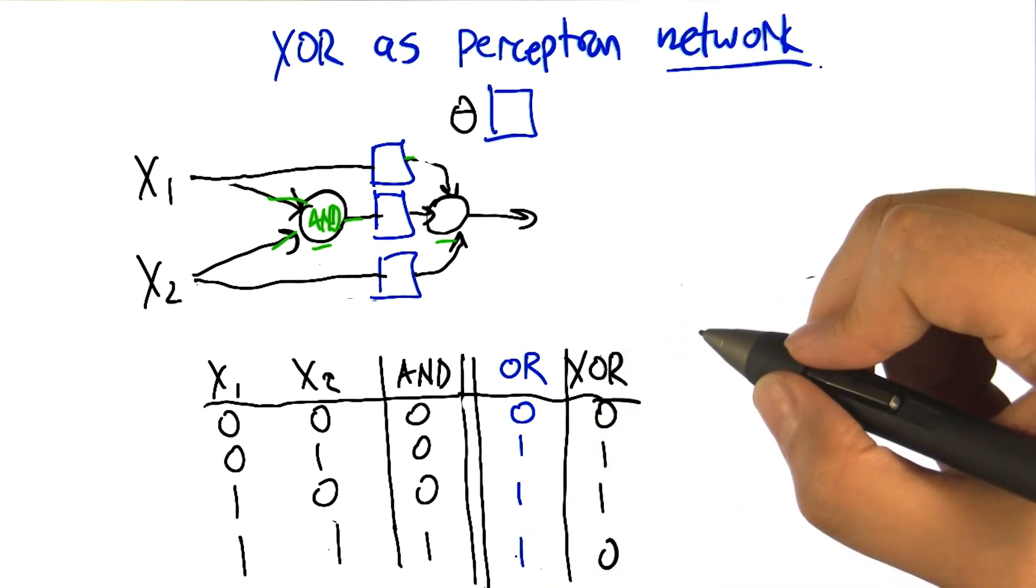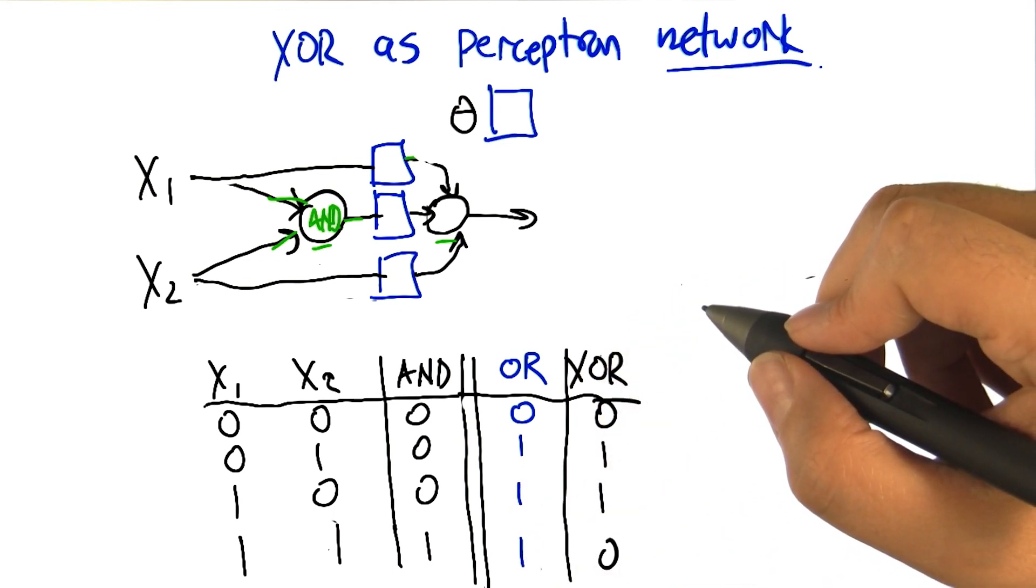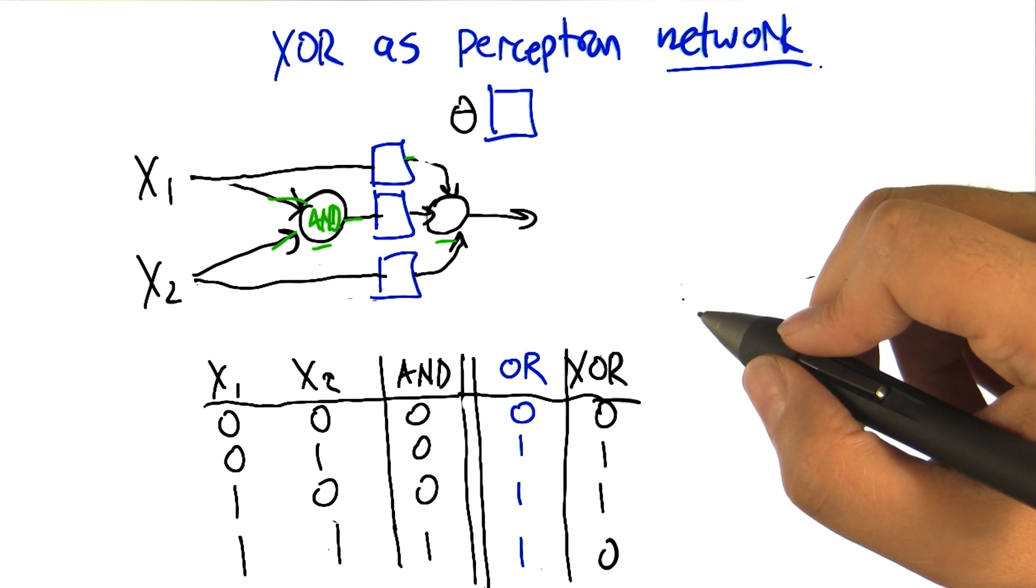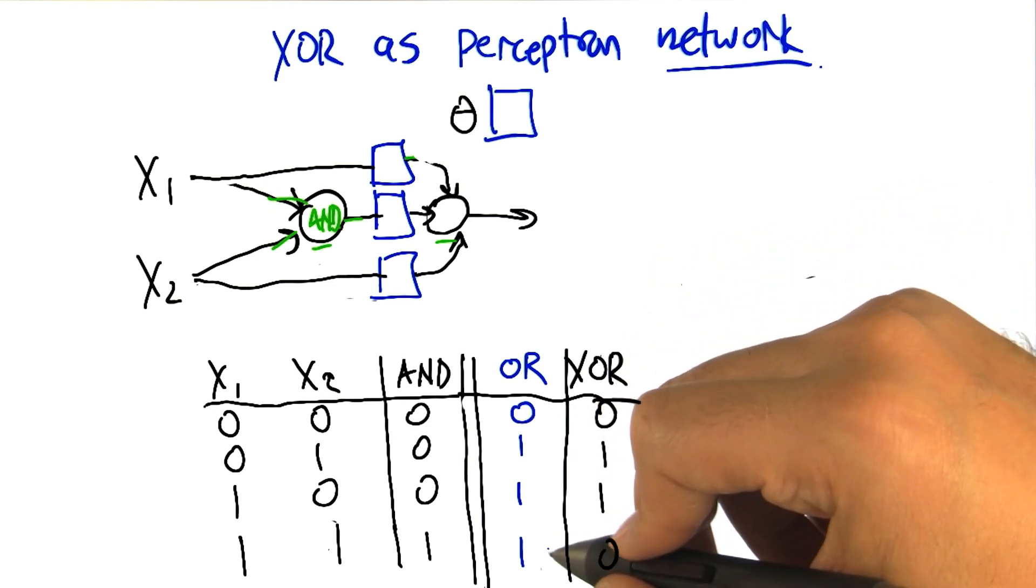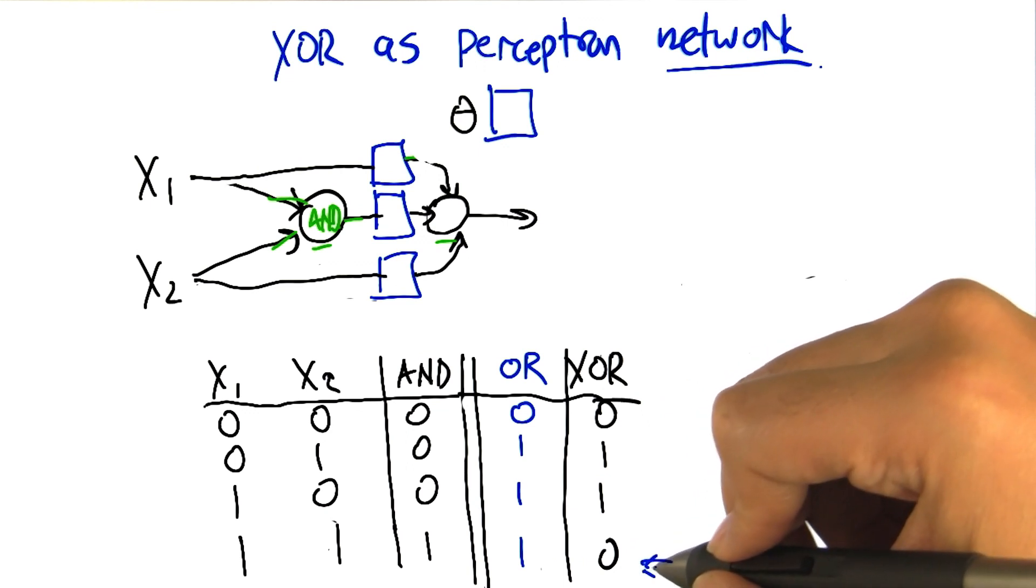All right, so OR is like that. Right, and you'll notice if you look at AND, OR, and XOR that OR looks just like XOR except at the very last row.